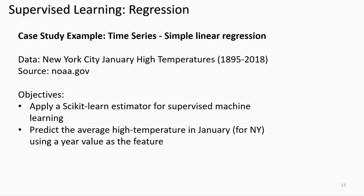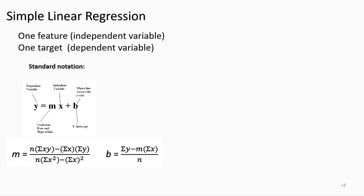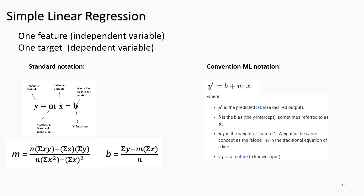Since the target variable is predicting temperatures — a continuous value — we will use a regression algorithm. The data consists of historical averages of high temperatures for New York from 1895 to 2018. We will use only one feature to predict the target temperature, making this a simple linear regression. This means the classic y = mx + b formula will be applied to determine the best-fit model using the calculated slope and intercept.